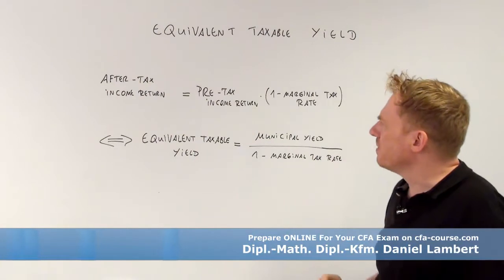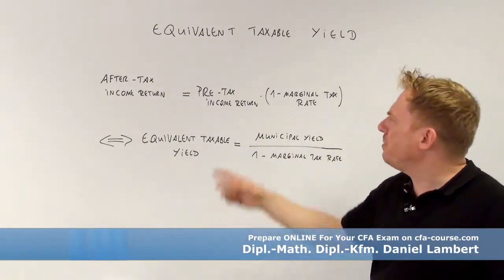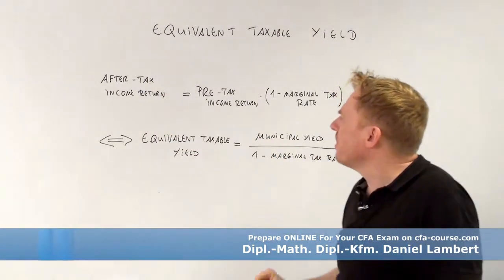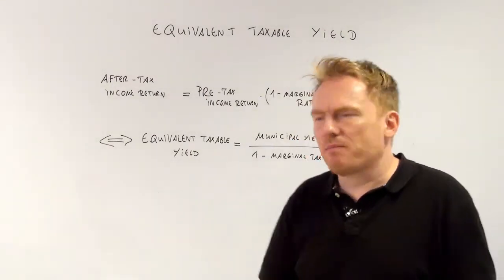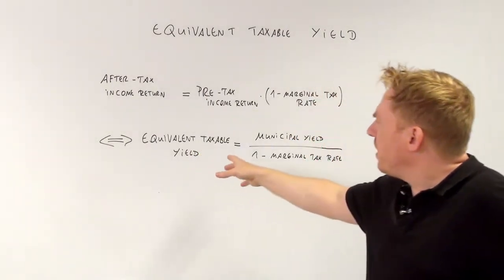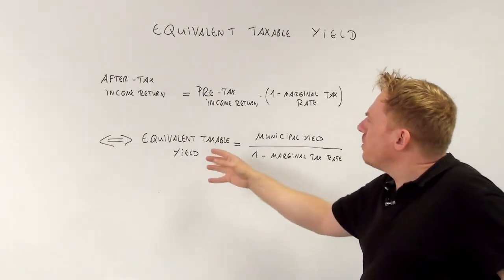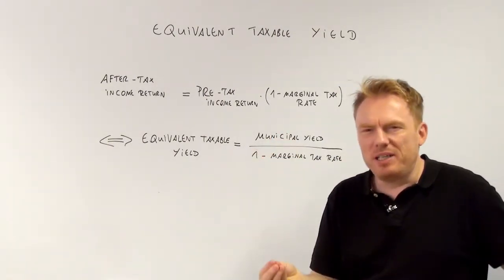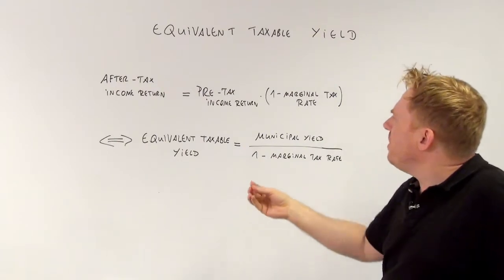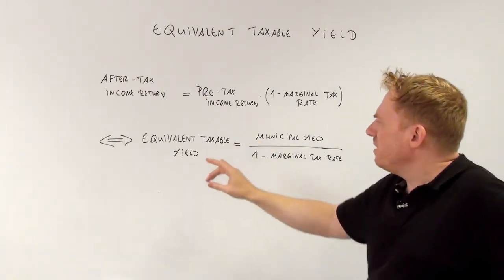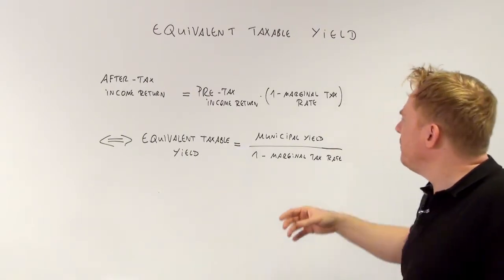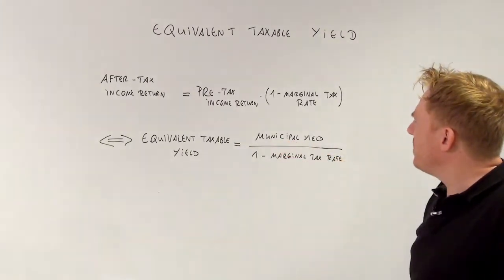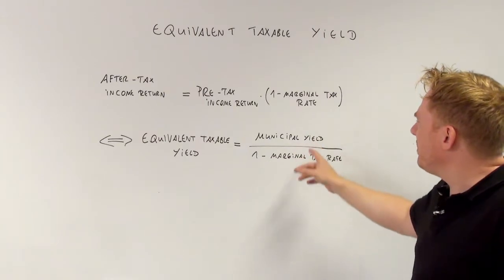And using this formula, using this relationship between pre-tax and after-tax, we can look at bonds. We can ask the following question: What is the equivalent taxable yield? What is the pre-tax yield that a bond has to offer to have the same return as the municipal yield?